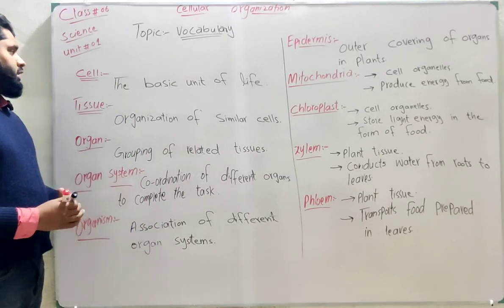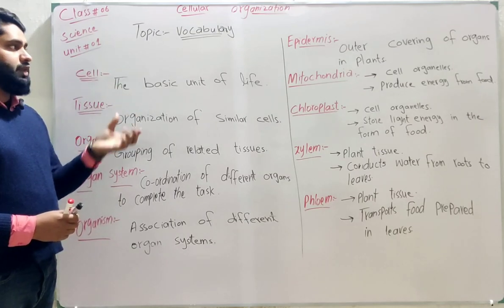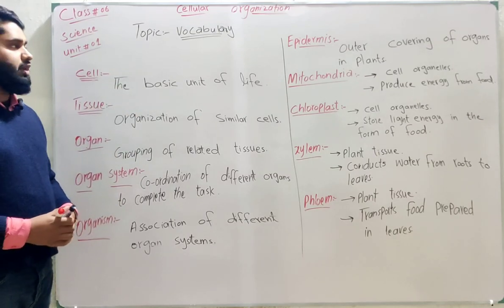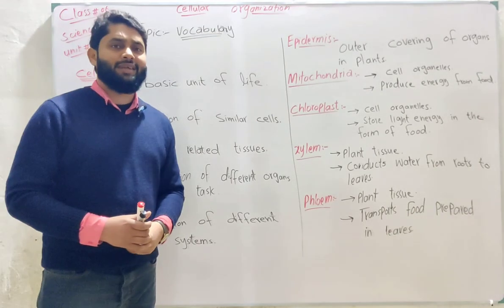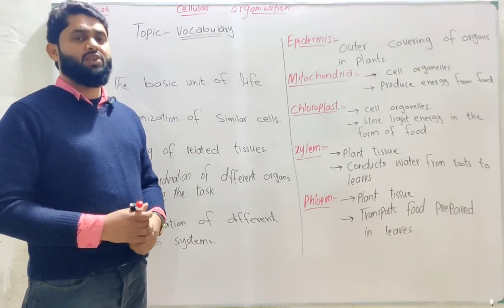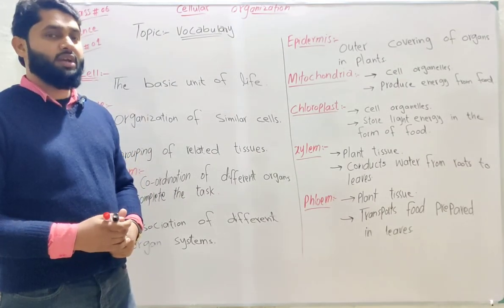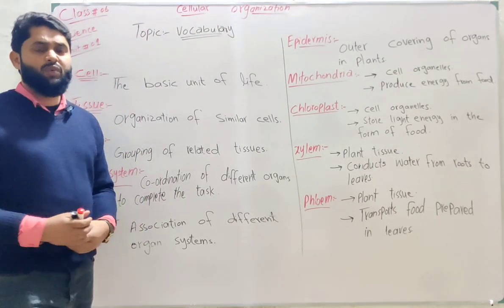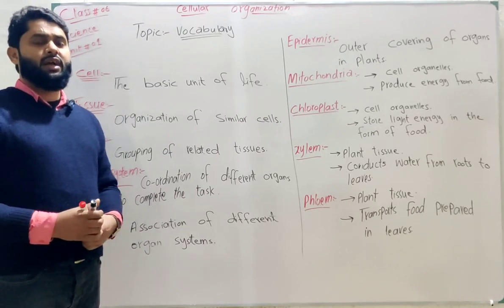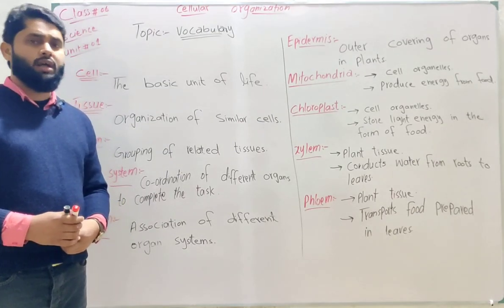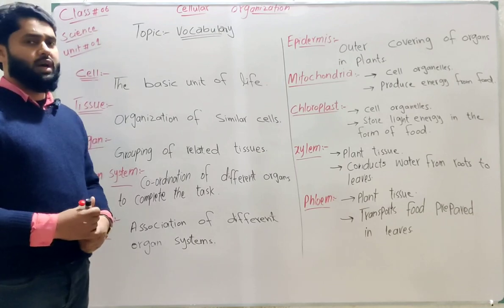Let's start. Our first definition: what is a cell? The basic unit of life is called a cell. What is life? Any substance which has certain characteristics — which can grow, which can respire, which can reproduce, which can breathe, and which can move on its own — is called a living thing. The basic unit of life is called a cell.